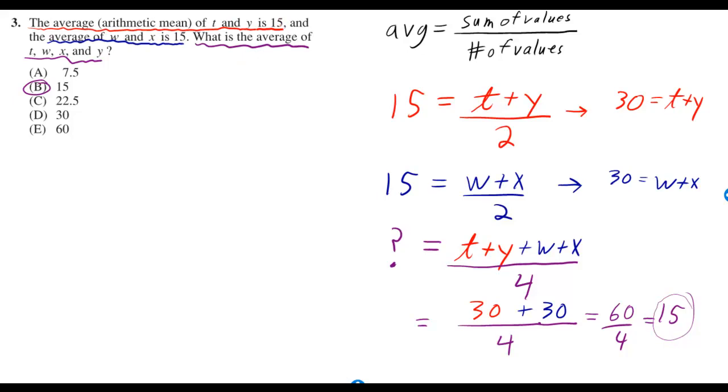The average of T and Y is 15 and the average of W and X is 15. What's the average of T, W, X, and Y? The formula for average is you take the sum of your values and you divide by the number of values.